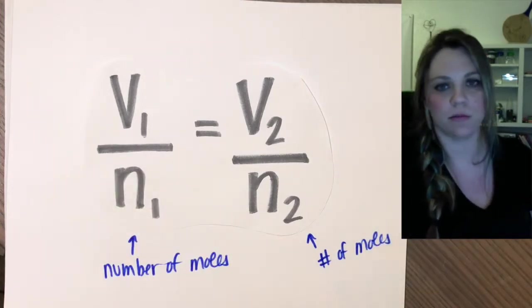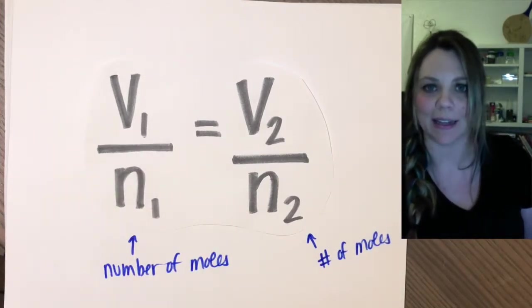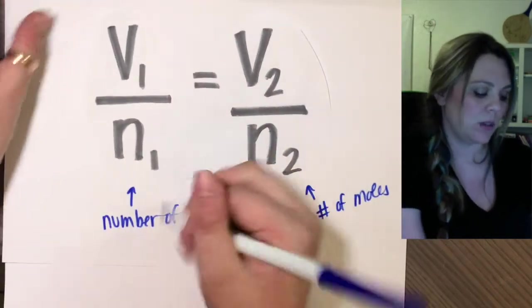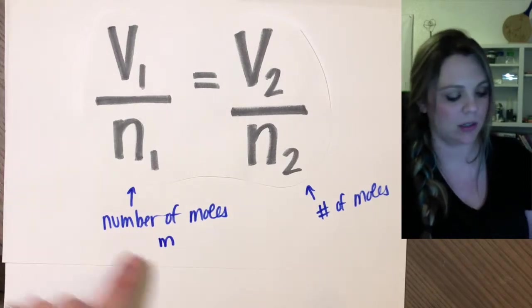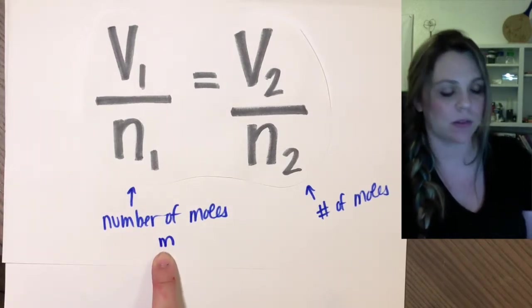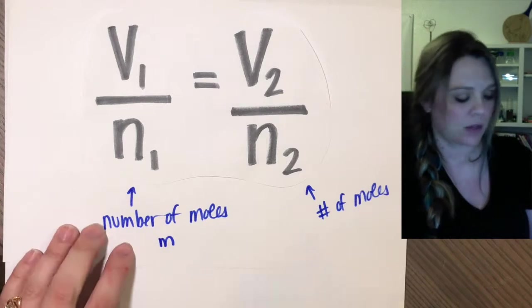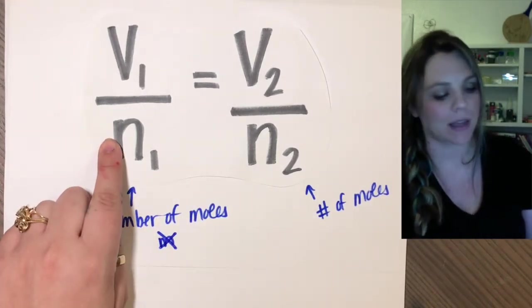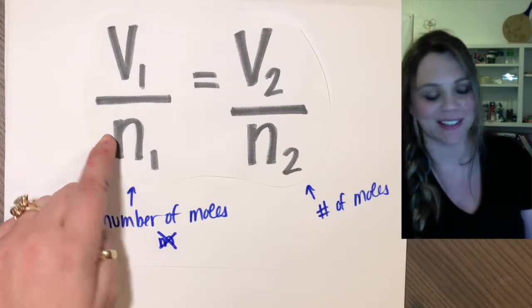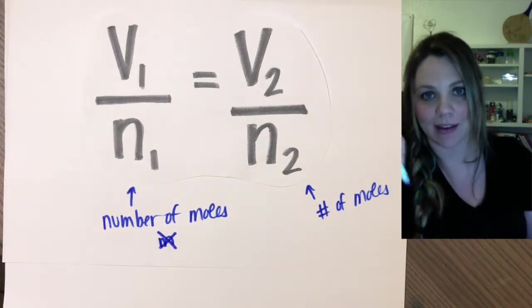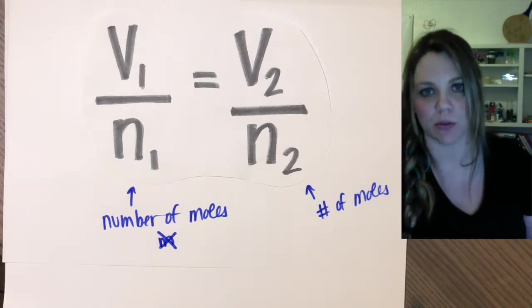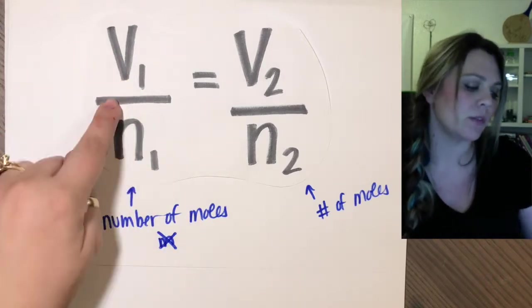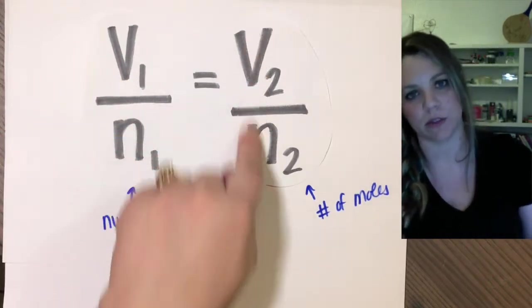Why? Just to confuse you, right? Moles doesn't even have an N in it. Why on earth is that our variable? Well, we use lowercase m for a lot of stuff. We use this for mass, we use this for meters. We've used it for a bunch of stuff already. So in gas variables, I apologize guys, N, lowercase n, means your number of moles. So talking about the amount. V is easy, that's talking about volume. Volume one over N1 equals V2 over N2.